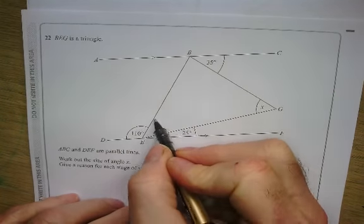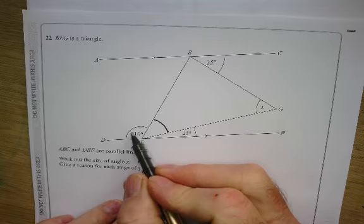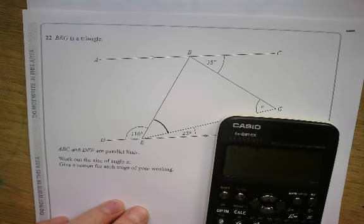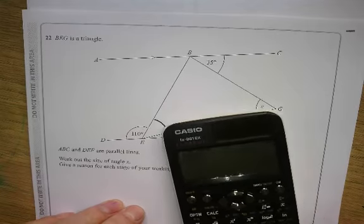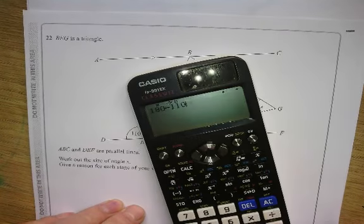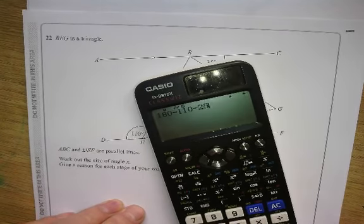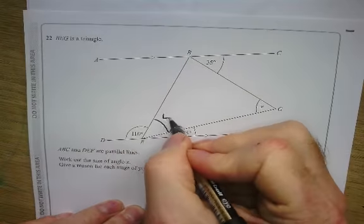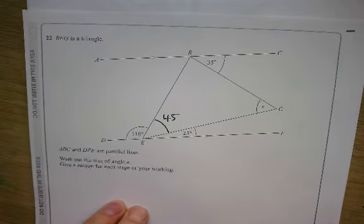Well, let's look at this angle here. And I can write on here, can't I? The angles on a straight line add up to 180. So 180 minus 110 minus the 25. Got a calculator? Use it. Don't think, oh, I can do this and then make silly mistakes.